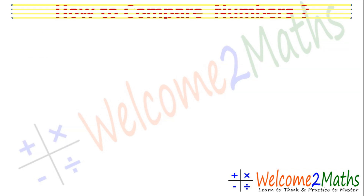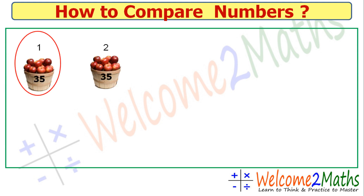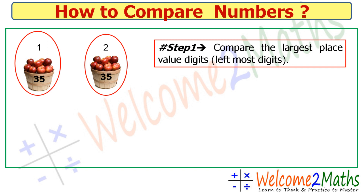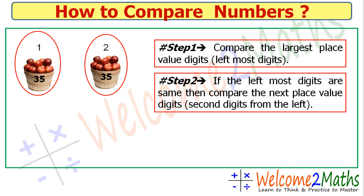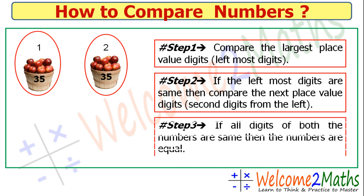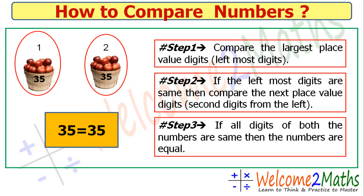Next example: basket 1 has 35 apples and basket 2 has 35 apples. Step 1: compare the tens digits — 3 and 3, they are the same. Step 2: compare the ones digits — 5 and 5, also the same. Step 3: if all digits of both numbers are the same, the numbers are equal. So we write 35 is equal to 35.